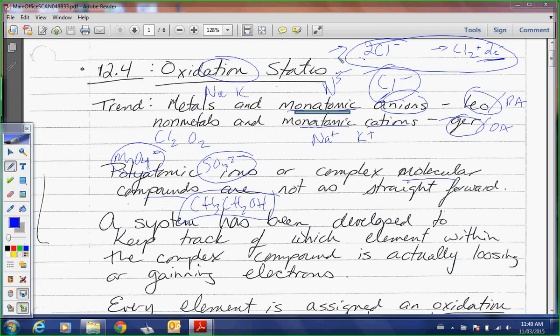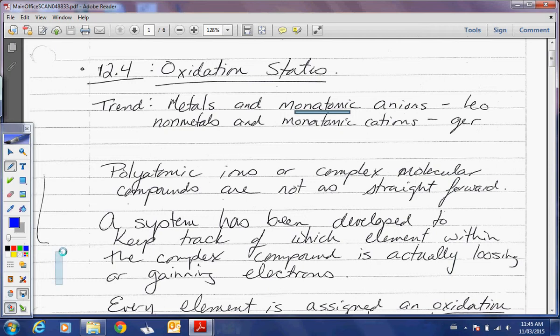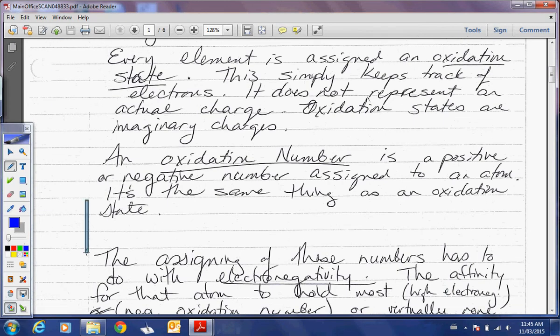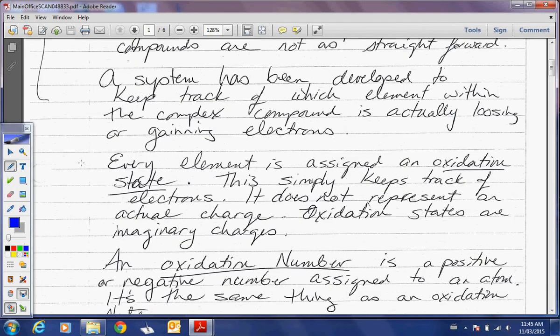So, a system has been developed to keep track of which element within the complex compound is actually losing or gaining electrons. Okay? So which atom is it, in ethanol, that's going to gain or lose the electrons?